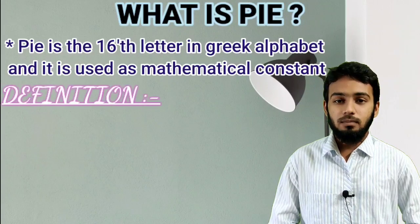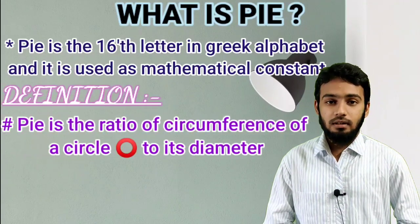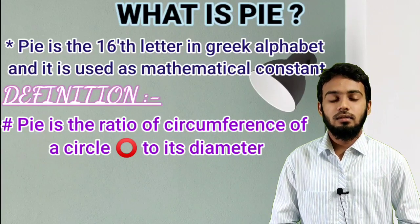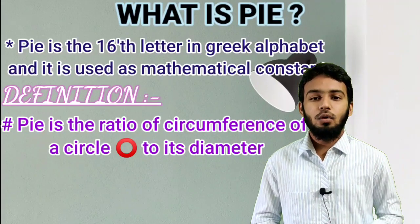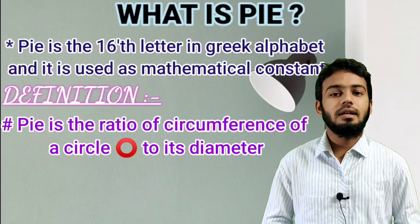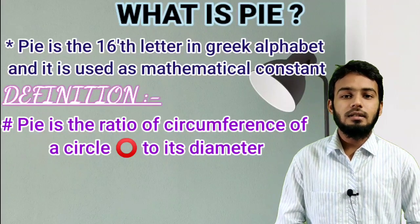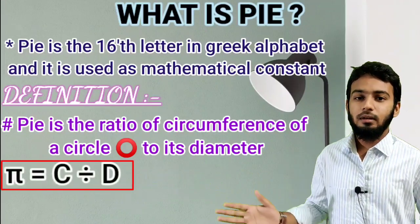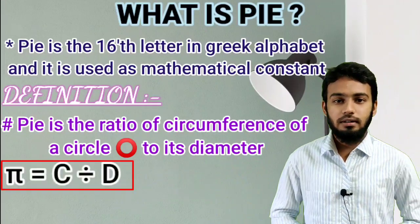By definition, Pi means the ratio of circumference of a circle to its diameter. That means Pi equals circumference divided by diameter. From here, we can create one more formula.